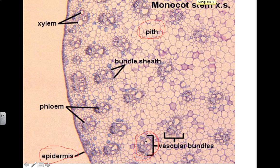In each of those vascular bundles, you're going to have larger circles — those larger circles are going to be the xylem that's transporting water up to the leaves. And then the smaller tubes around it in this region are going to be the phloem. So the phloem is the smaller tubes; the larger tubes are going to be the xylem. Xylem transports water. Phloem is going to transport sugars. So that's a monocot stem.